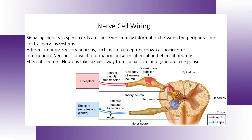As discussed, this is how the nerve cell processes information, but how does this processing turn into anything? That is through nerve cell wiring. There are sensory neurons — afferent neurons — which function like pain receptors. Interneurons transmit the information and are where some of the processing occurs. Efferent neurons are where an action would take place. To illustrate this with a simplified reflex arc example: